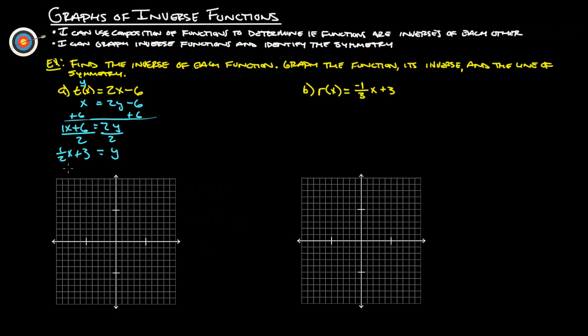So officially, if we're going to write this the correct way, 1 half x plus 3, that is our, if this is t of x, this is t to the negative first of x. There's our inverse function. Now, it says we want to graph the function, its inverse, and the line of symmetry. So let's do this. Let's do the inverse, which is what we just found in blue.